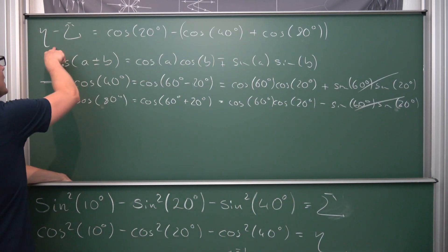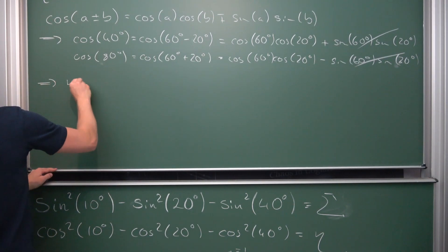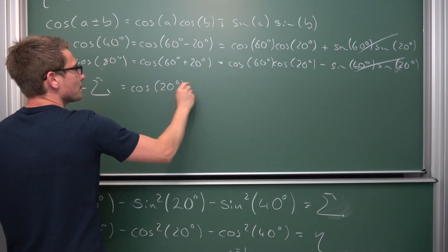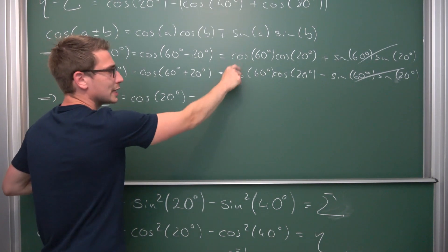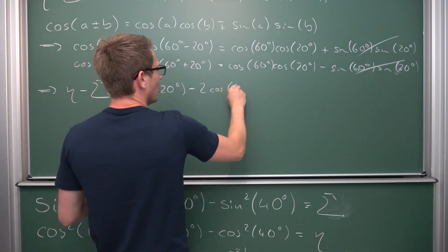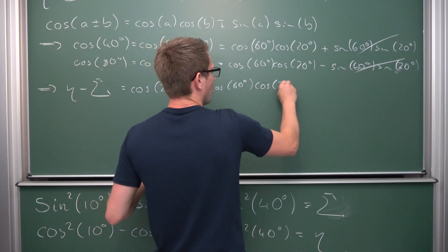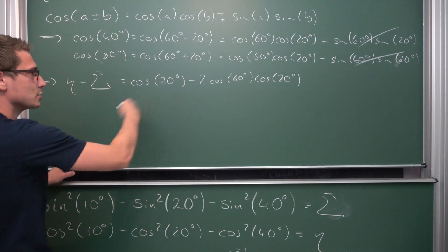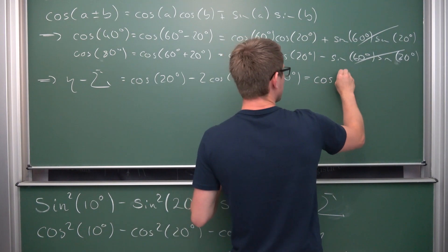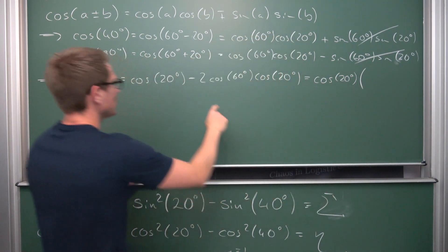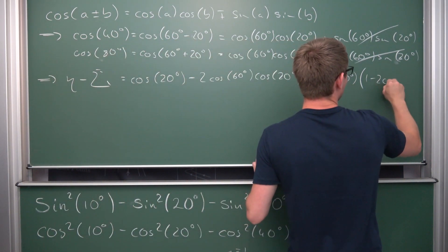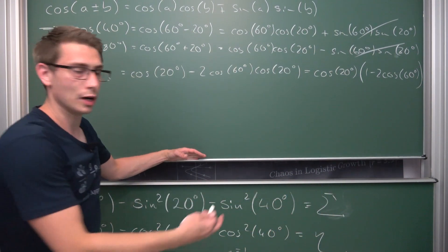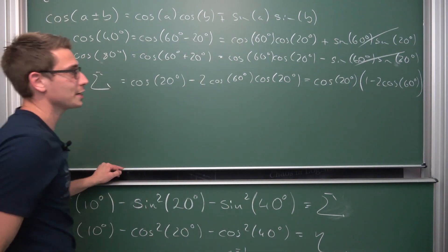Overall we now have eta minus sigma equal to cosine of 20 degrees, then negative two times cosine of 60 degrees times cosine of 20 degrees. We can factor out cosine of 20 degrees, giving us eta minus sigma equals cosine of 20 degrees times the quantity one minus two times cosine of 60 degrees.